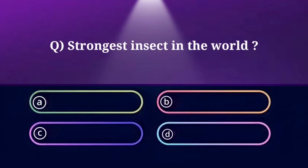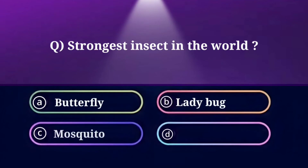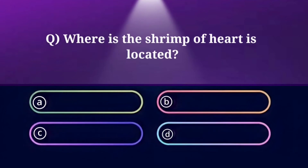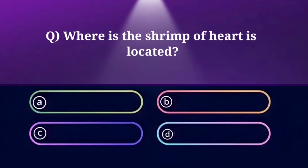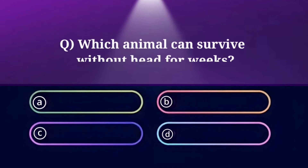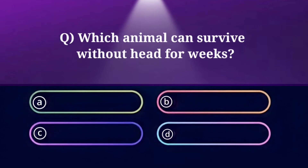Strongest insect in the world. Option A: Butterfly, B: Ladybug, C: Mosquito, D: Dung Beetle. And the answer is Dung Beetle. Where is the shrimp's heart located? Option A: Leg, B: Hand, C: Head, D: Ear. And the answer is Head.